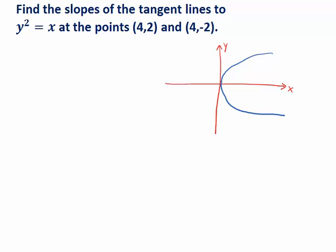Let's look at an example of a technique called implicit differentiation. Here we have a question asking us to find the slopes of some tangent lines to a curve. In this case, the curve is y squared equals x.